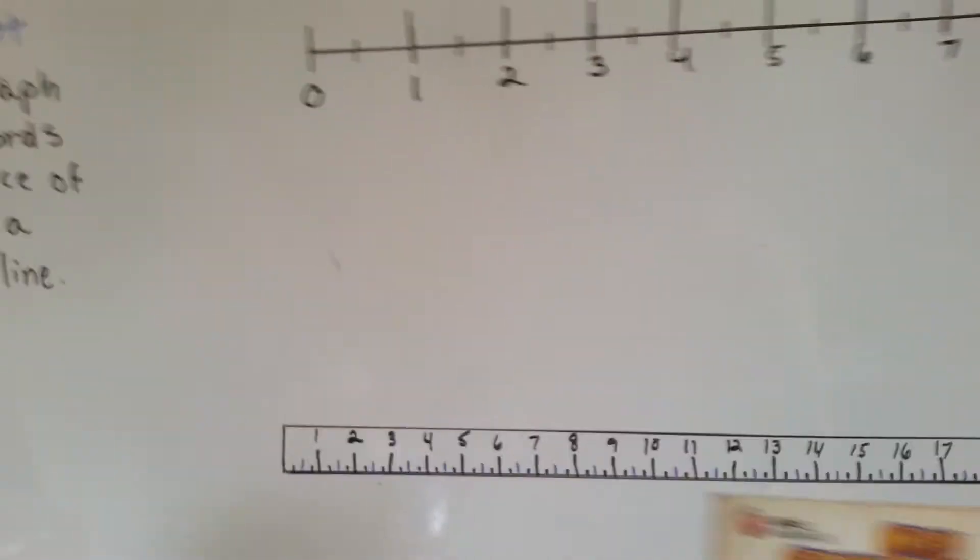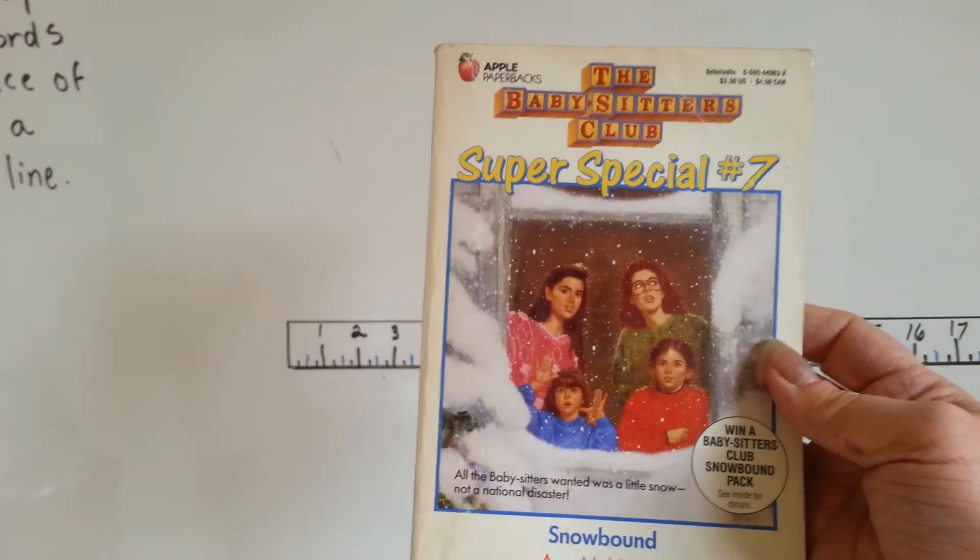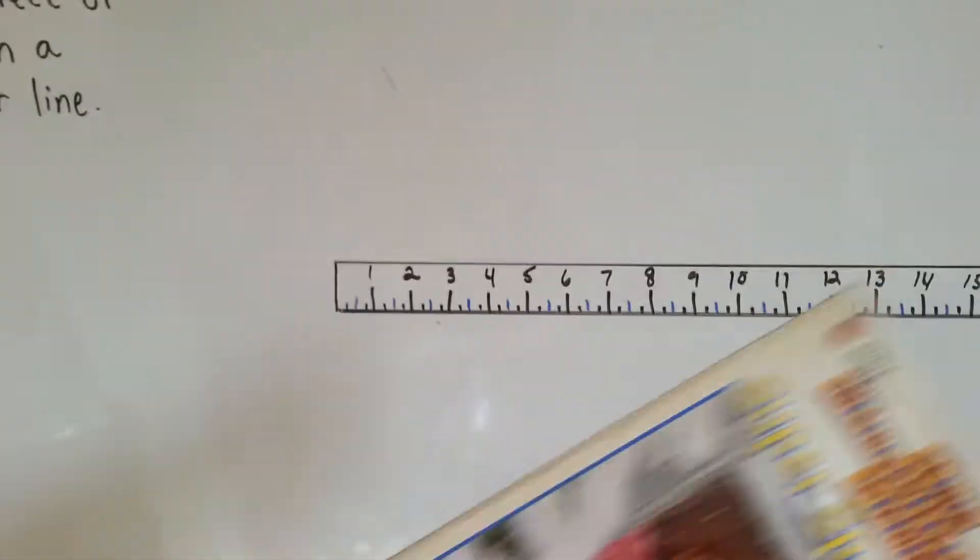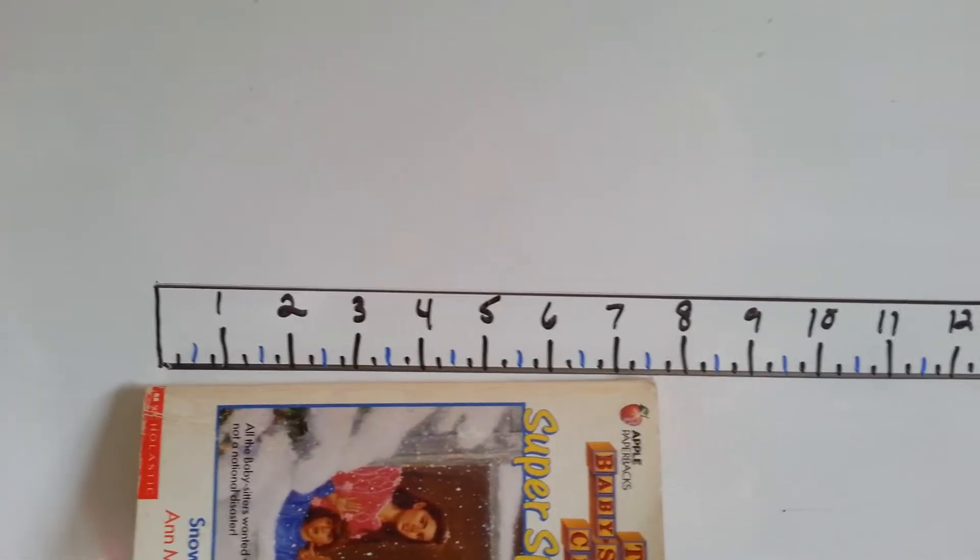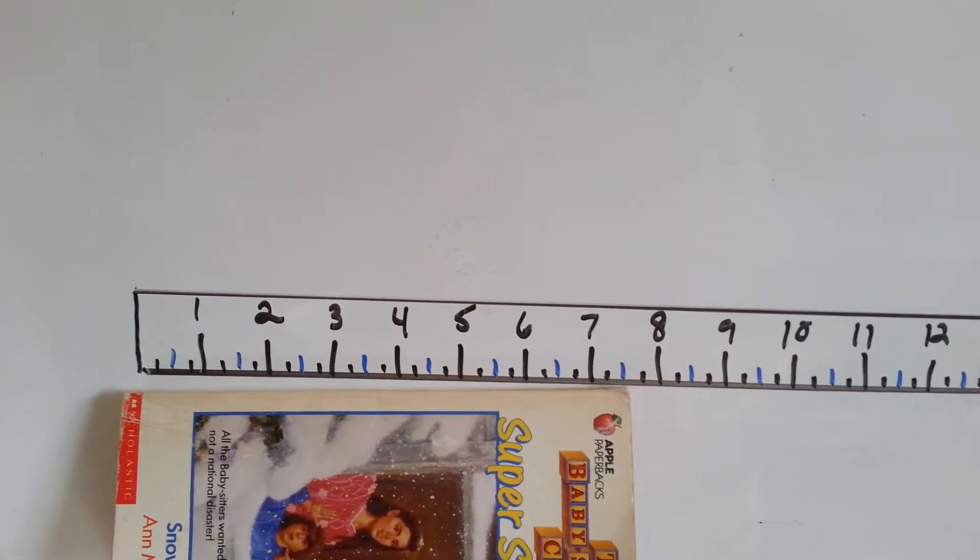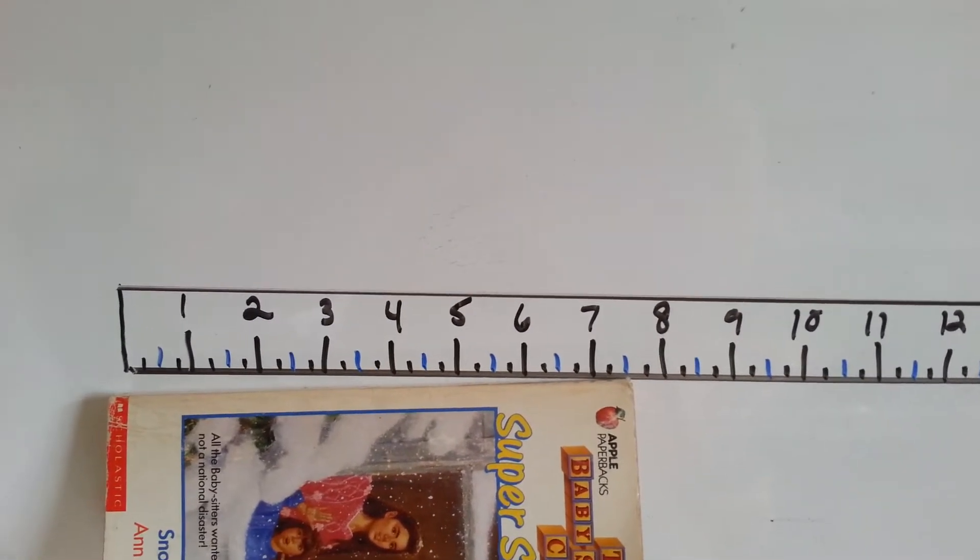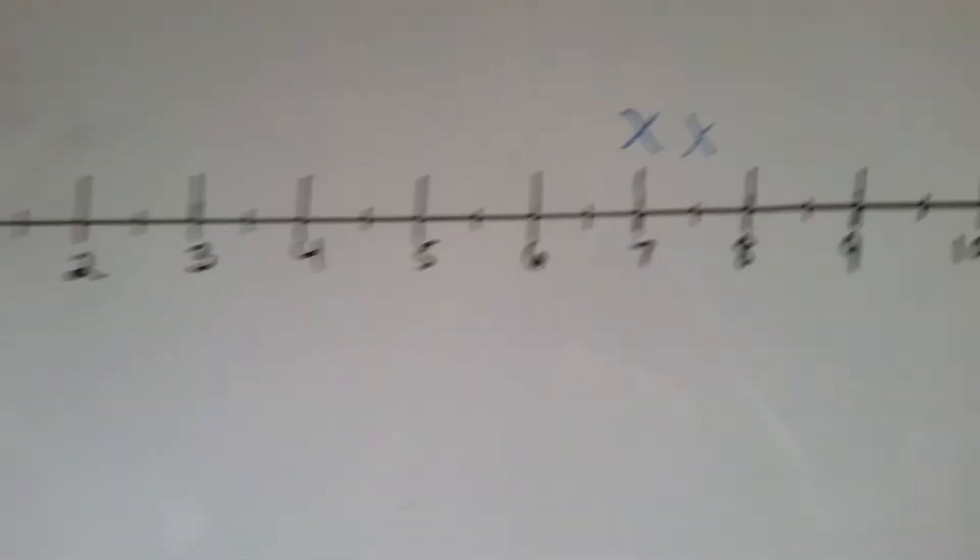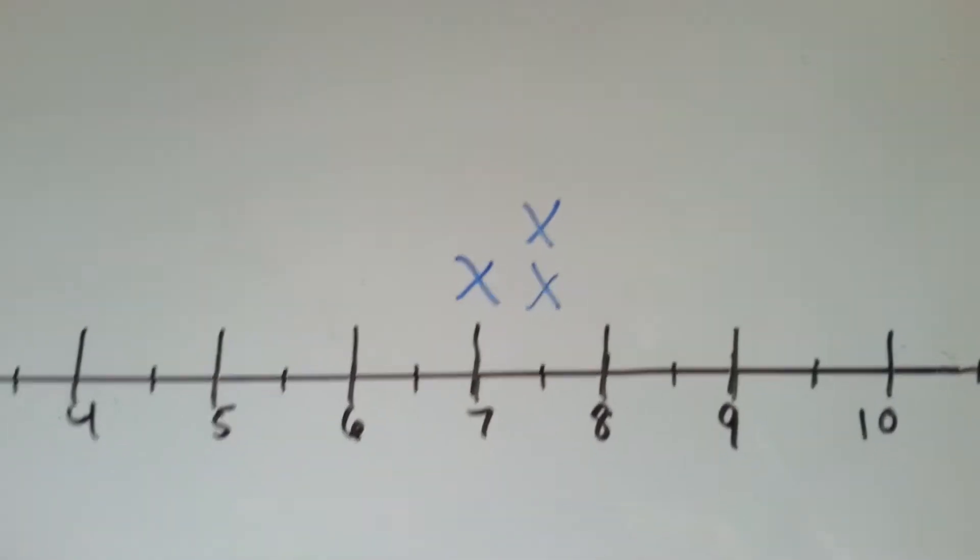Alright. The next book we've got is The Babysitter's Club. There's Snowbound. The author is Anne M. Martin. I like Babysitter's Club. There's some good stories in there. We're going to line it up by the one inch. Is it closer to seven, seven and a half, or eight? Seven and a half, isn't it? See it right in between the seven and the eight? So, Babysitter's Club is also at seven and a half. For our line plot, we put the x above the other one.